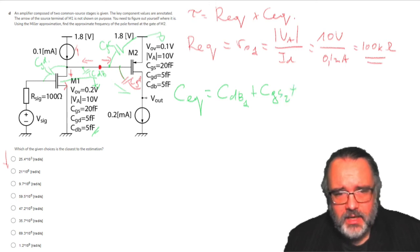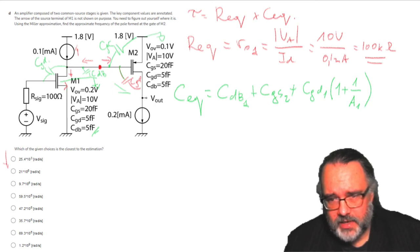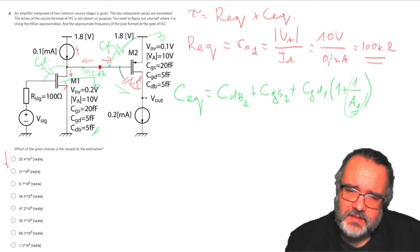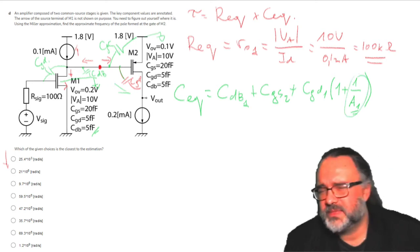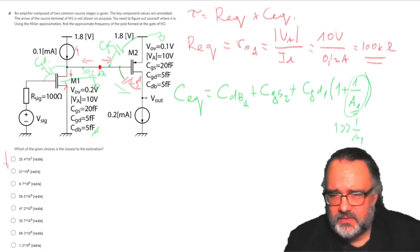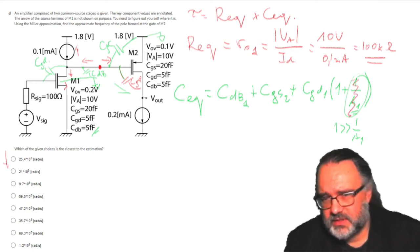Then I have C gate drain of M1 multiplied by 1 plus 1 divided by A1, where A1 is the gain of the first stage. This is a very small number because A1 is a big number, so I can simply ignore this and just consider C gate drain of M1.